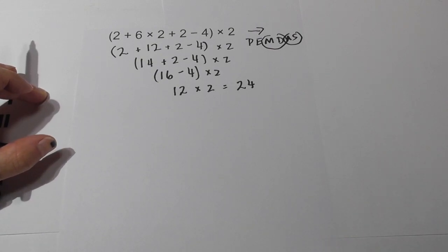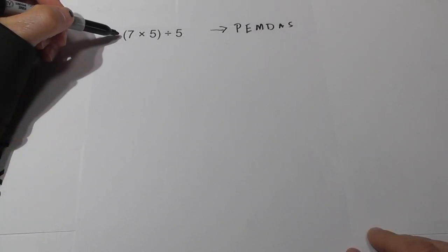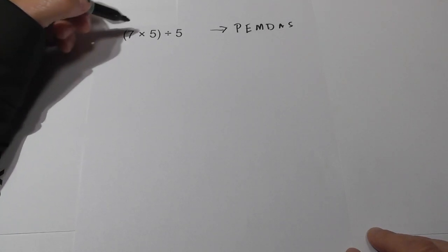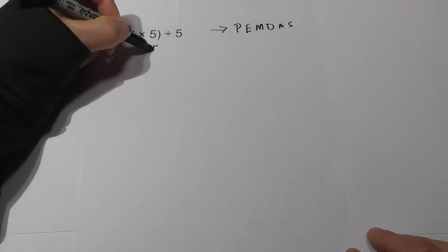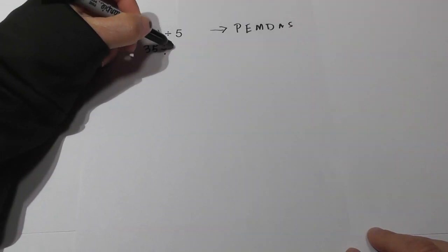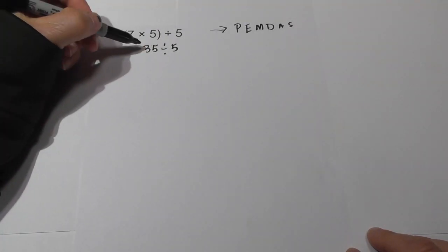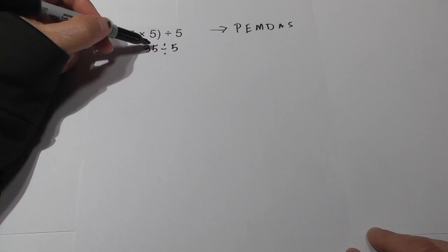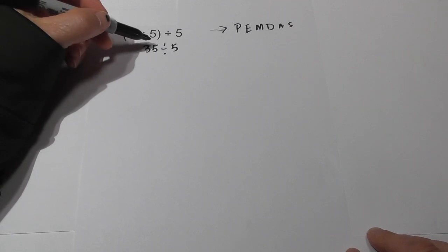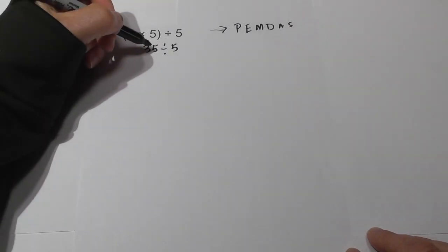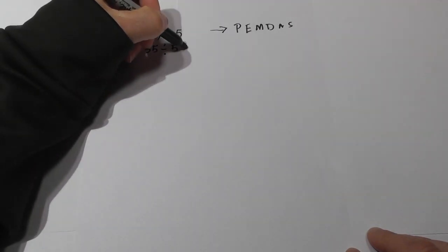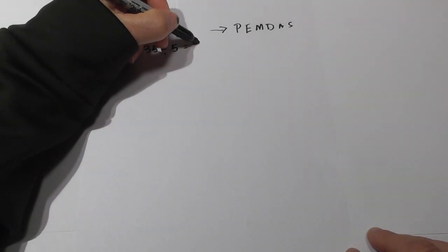Problem 8: working left to right — parenthesis? Yes — 7 times 5 is 35. Bring down divided by 5. Next, no parenthesis, no exponents, so we begin with division — division and multiplication are linked together. 35 divided by 5 equals 7.